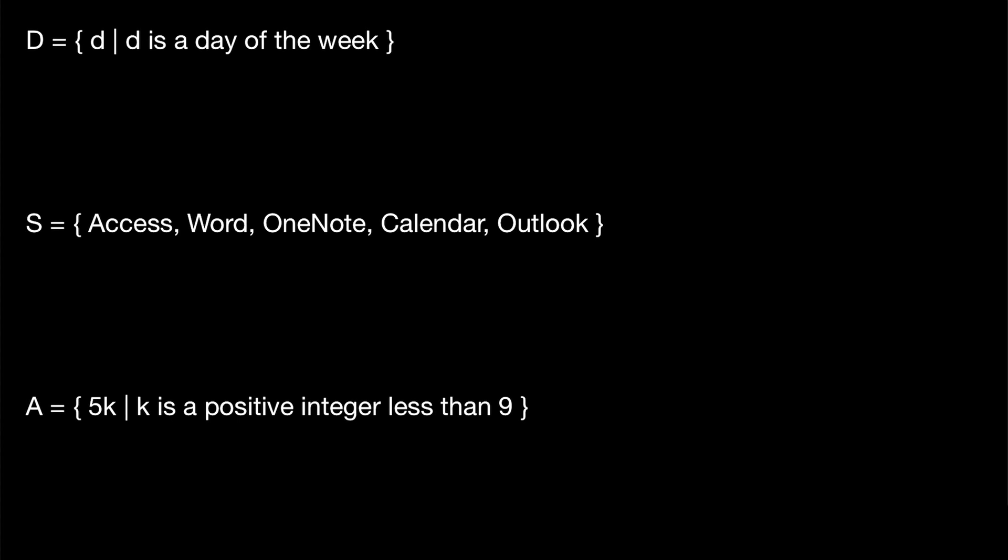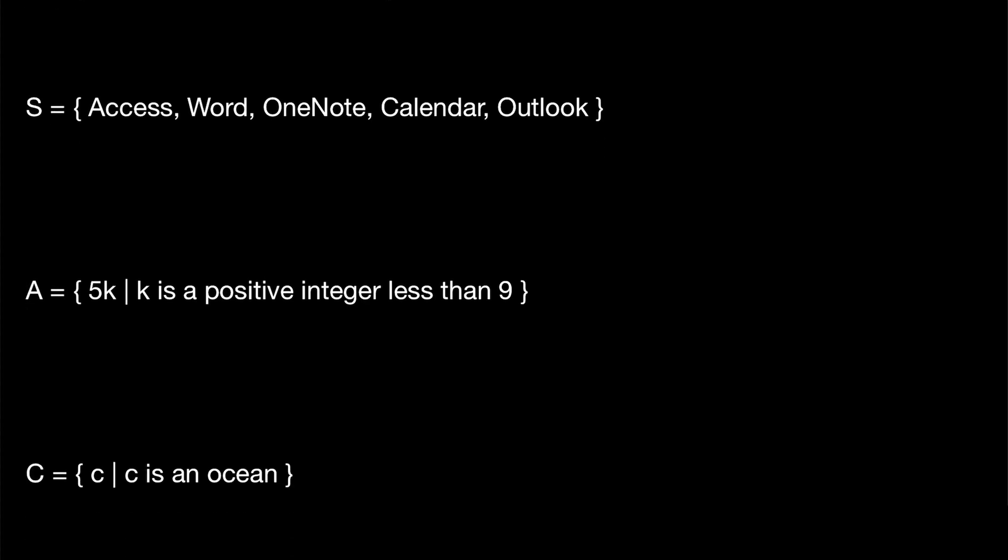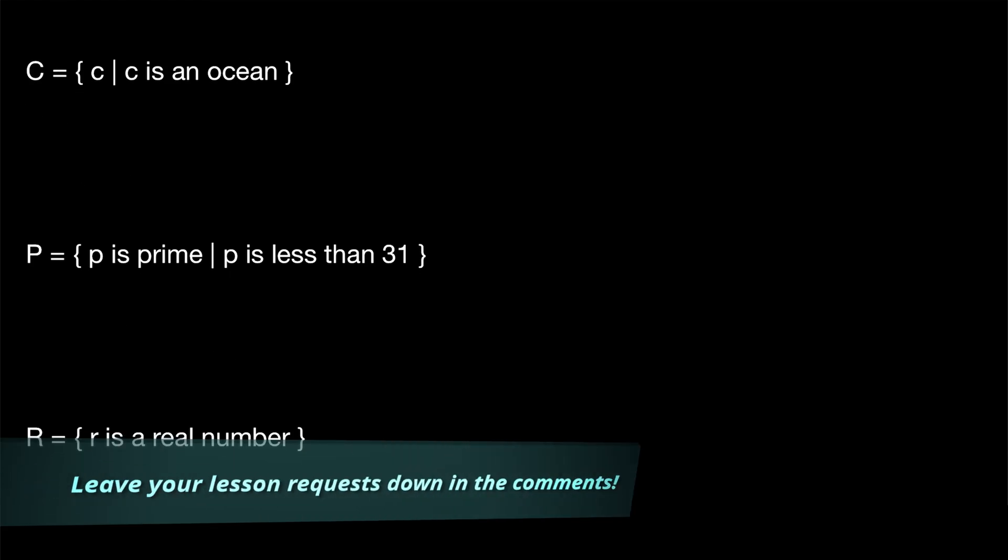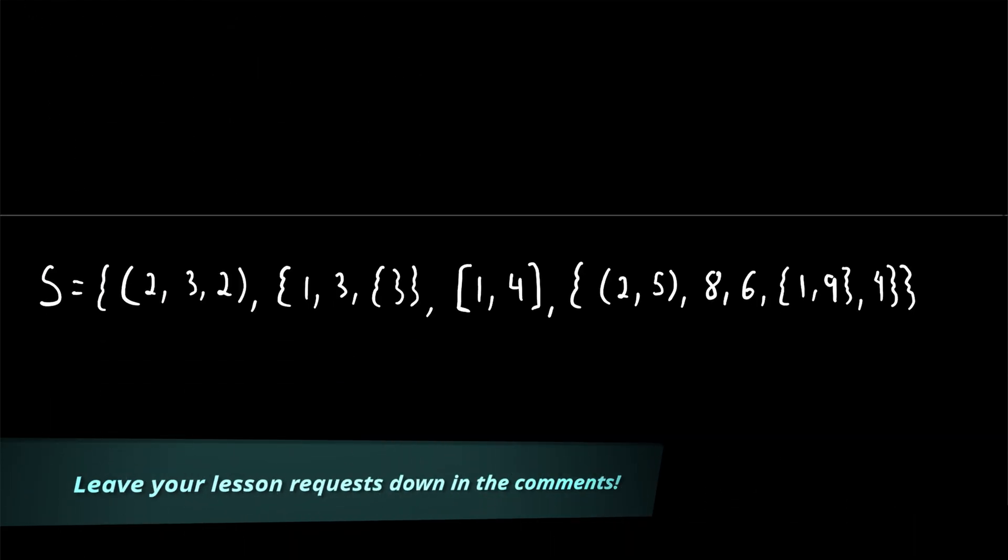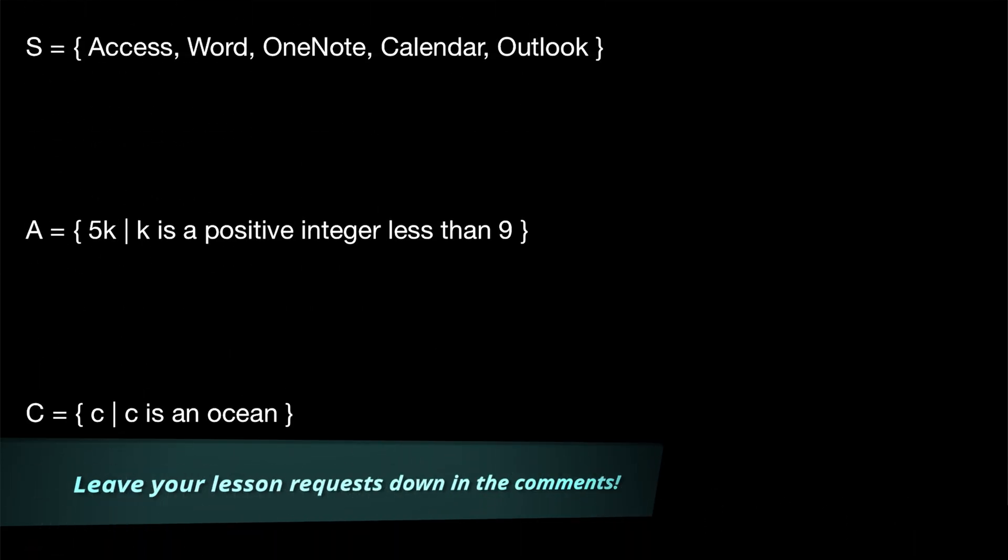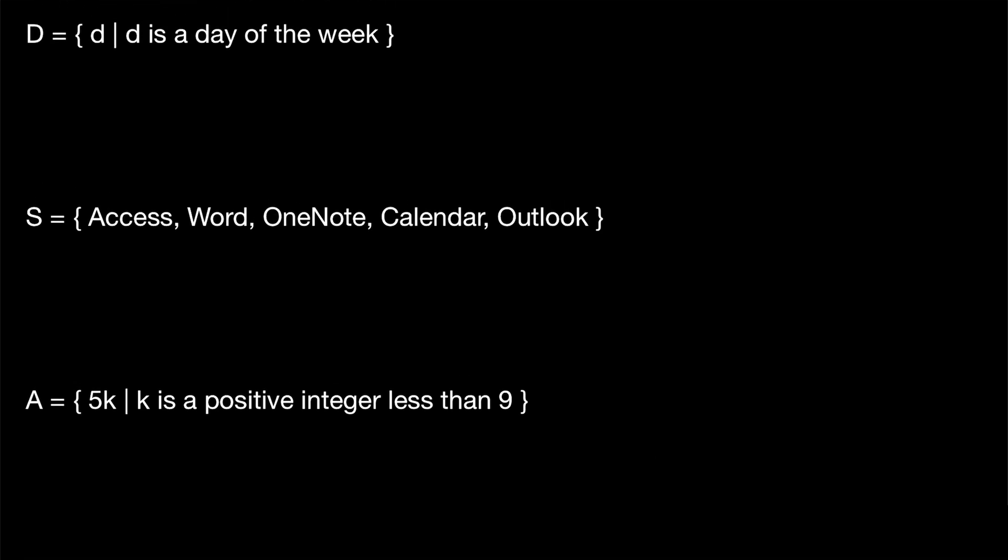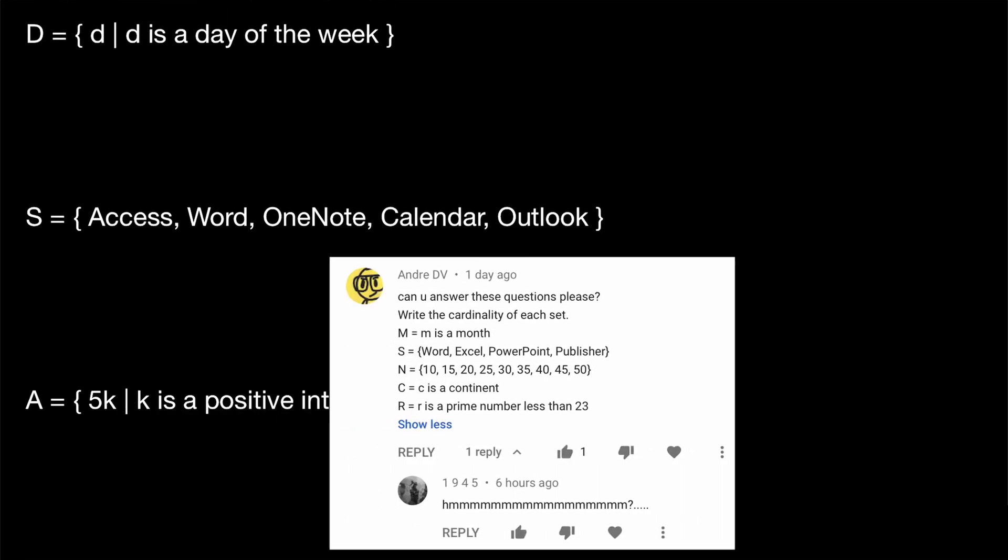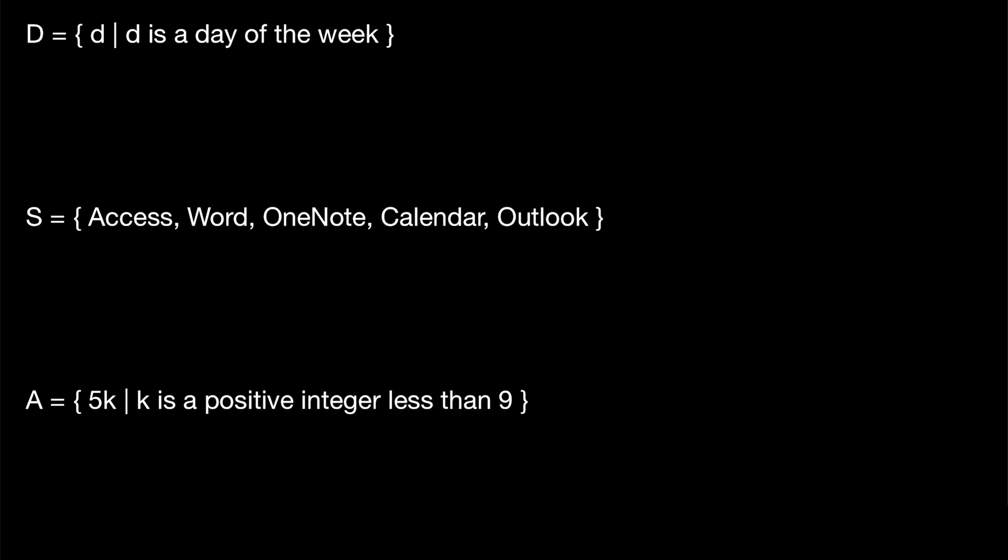How do we find the cardinalities of some basic sets in set builder notation? That's what we'll be going over today. Here's just a quick look at the sets we'll be looking at. This is a viewer requested video. I always appreciate those viewer requests, so be sure to leave yours down in the comments. I didn't take these sets exactly from the viewer request. I just slightly changed them so the ideas should be similar.